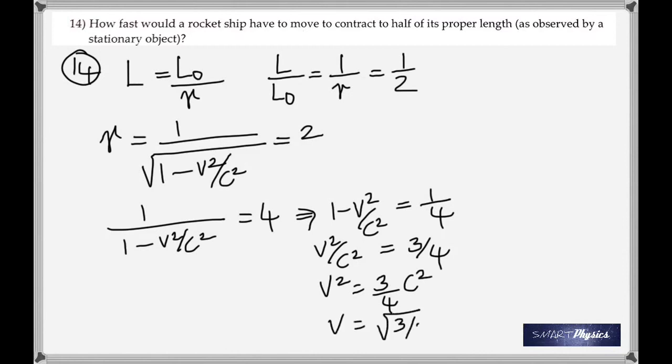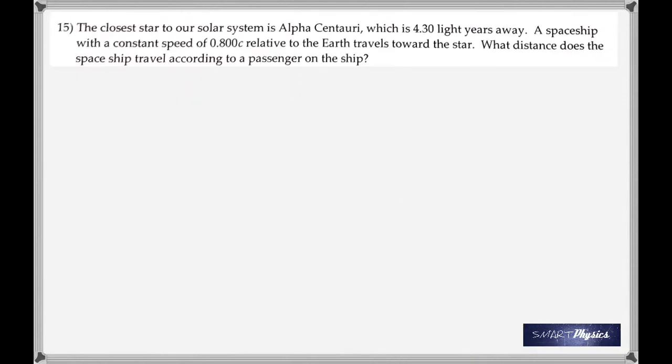I am having to rush through this because that's just 10 minutes before class begins. So, hopefully you understand all this. 15, the closest star to our solar system is Alpha Centauri, which is 4.30 light-years away. A spaceship with a constant speed of 0.8c relative to the Earth travels toward the star. What distance does the spaceship travel according to a passenger on the ship?